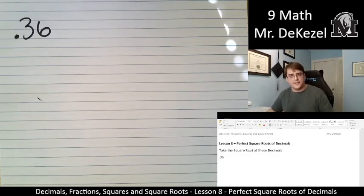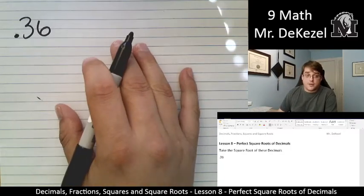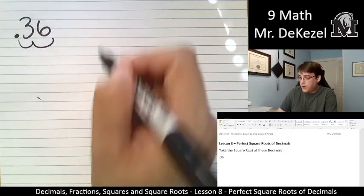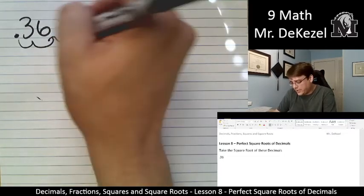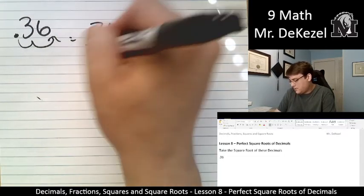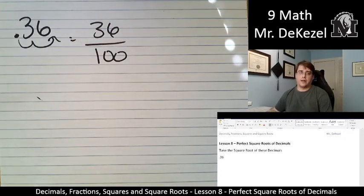And most of these, I think all of these hopefully, are going to be the right fractions. So to turn this into a fraction, I'm going to move the decimal place 2 over, and that means that I'm going to be placing 36 over 100 in this fraction. 36 over 100.